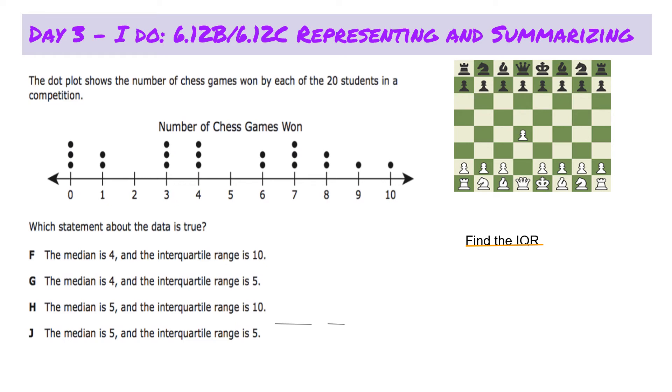The dot plot shows the number of chess games won by each of the 20 students in a competition. Which statement about the data is true? The first thing we'll do is our annotations. First, I would want to circle important numbers. I would circle the number 20.